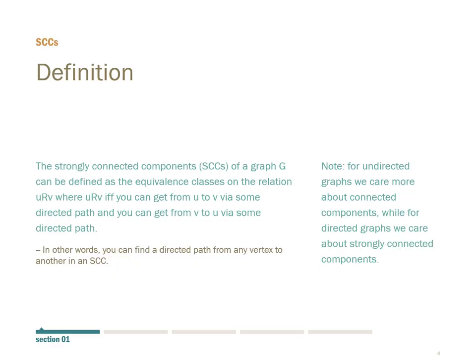So first, what are SCCs? SCCs can be defined as the equivalence classes on a relation U or V, where U relates to V if and only if you can get from U to V via some directed path, and you can get from V to U via some directed path as well. This is the formal definition, but you can also say that you can find a directed path from any vertex to another in an SCC.